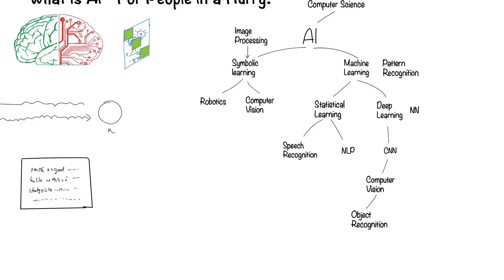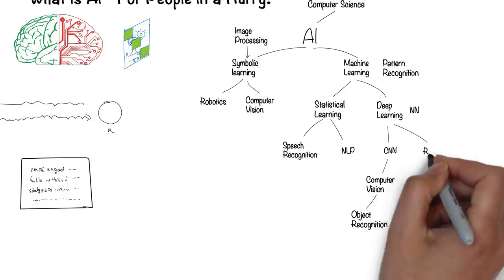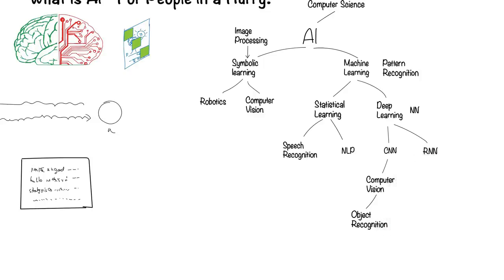Humans can remember the past, like what you had for dinner last night. We can get a neural network to remember a limited past as well. This is a recurrent neural network.